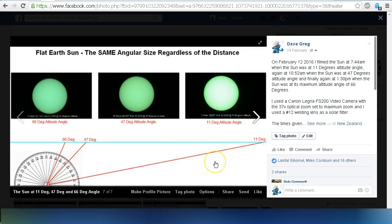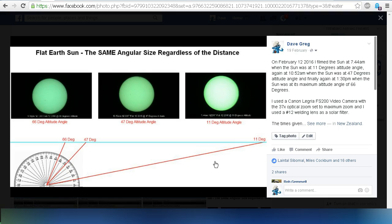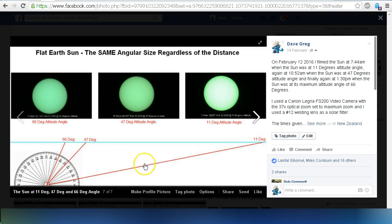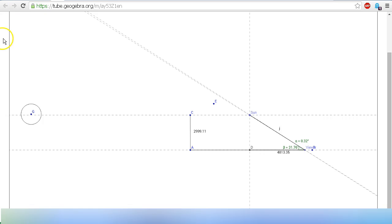Now here is a comparison that I put together of the three images of the Sun and the relative angle using a protractor, so you can see there 11 degrees, 47 degrees, and 66 degrees. So we should expect that when the Sun was further away it should have been a lot smaller than when it was 66 degrees angle altitude above me. But obviously we see that the angular size of the Sun is exactly the same.